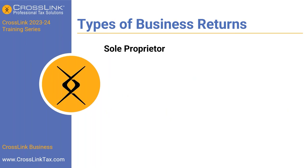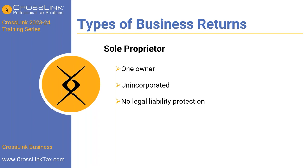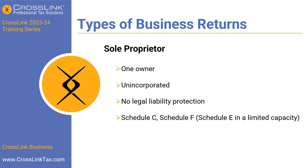The first type of return is a sole proprietorship. If you're doing individual returns and people are coming to you with Schedule Cs — meaning they are self-employed — you're already doing a form of a business return. A sole proprietorship consists of one owner, it is unincorporated, and there are no legal liability protections. Schedule Cs, Schedule Fs, and Schedule Es in a limited capacity are associated with the sole proprietor within the individual program, the 1040.